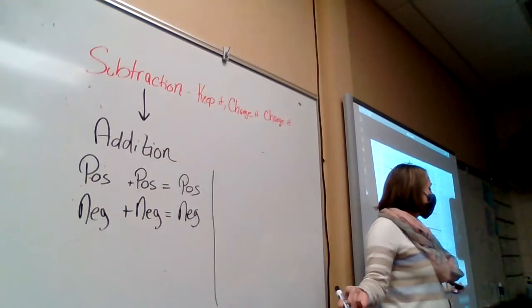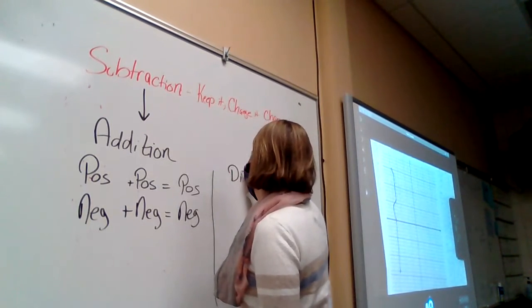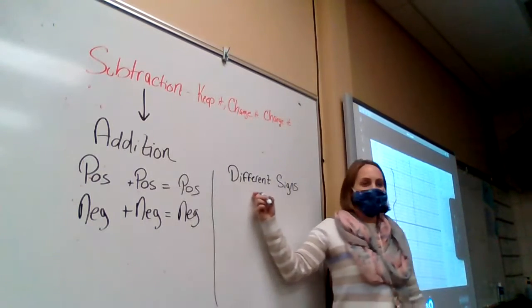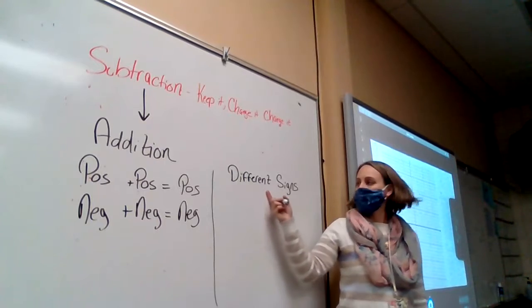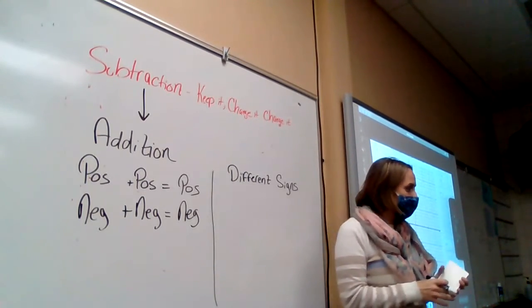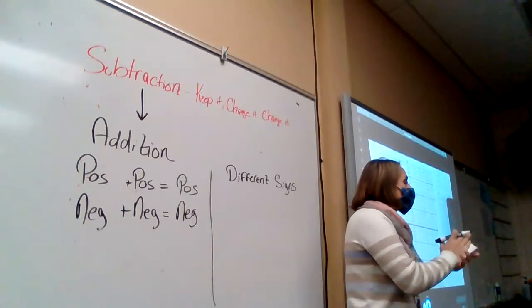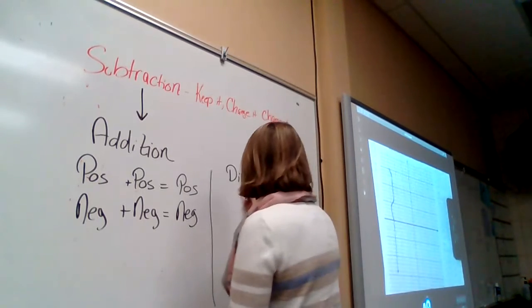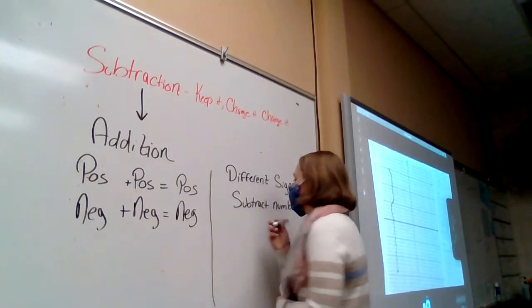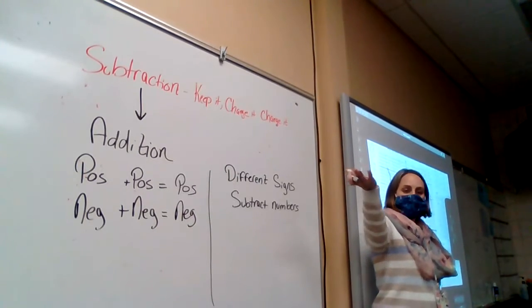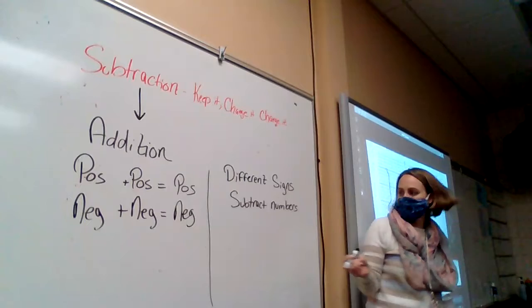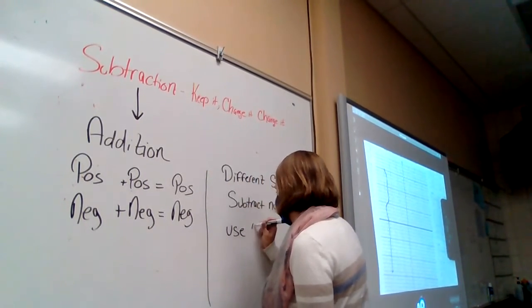The tricky part is when the signs are different. If you have different signs, so one is going to be positive and one is going to be negative, if we think back to the red and blue dots, the red and black dots, some of them are going to cancel out. When they cancel out, that's subtraction, really. So we're going to subtract the numbers. Could you write an example? Yeah.